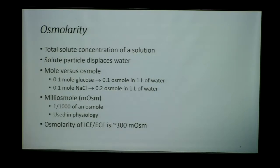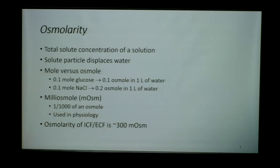But if we take sodium chloride and also disperse that in one liter of water, the osmolarity of that solution changes — it's now 0.2 osmol. That's because sodium chloride further dissociates into two different particles in water. So osmolarity takes the total solute concentration, the total number of particles that have been dispersed in the water. The moles will look different from the osmoles — two solutes can have the same moles and have a different osmolarity in solution.